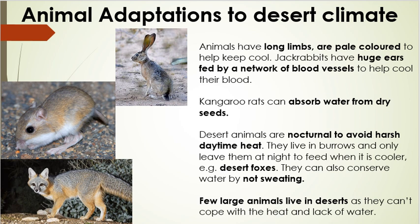Jack rabbits have huge ears fed by a network of blood vessels to help cool their blood. Those big ears catch the wind and breeze, which flows through them and cools the blood running through the veins and blood vessels — very much the same way a car radiator works by drawing in air to cool the engine coolant.